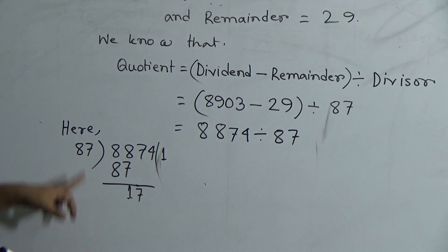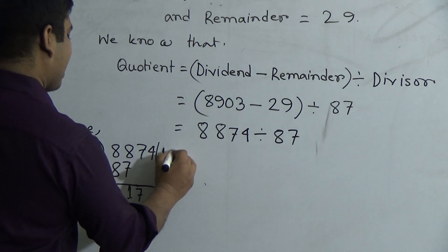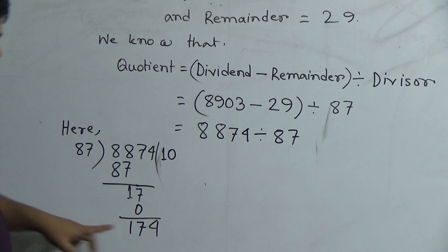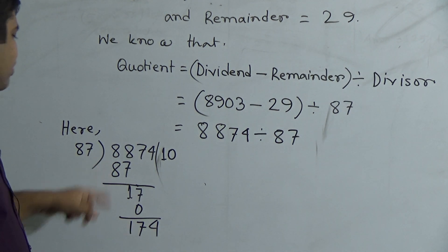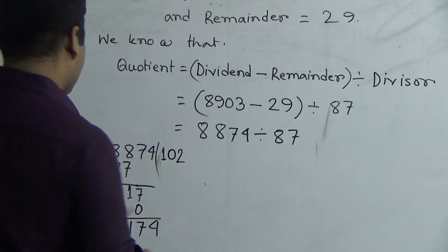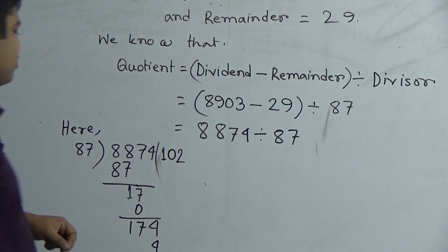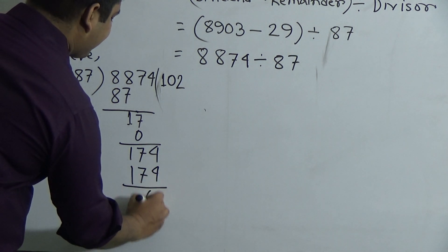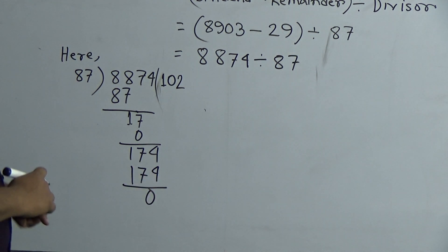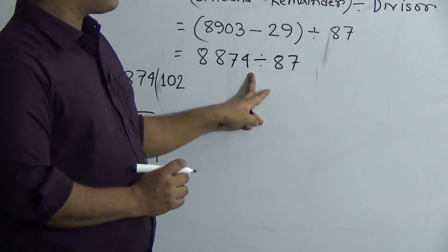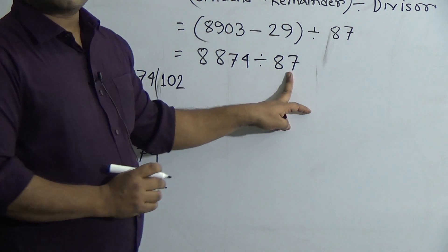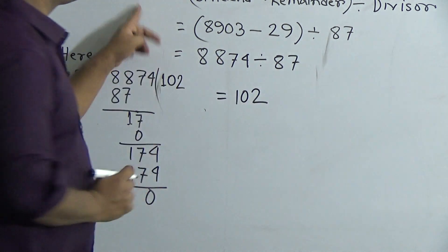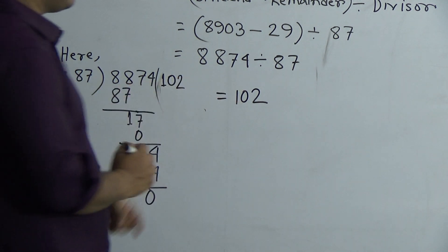In 17, 87 goes in 0 times, that means 0. Subtract and we get 174. In 174, 87 goes in 2 times, that means 72 is 14, carrying 1, 82 is 16 plus 1, 17. Okay, now we subtract and we get 0. So dear students, if we divide 8874 by 87, we get 102. So this 102 will be the quotient. I hope you have understood. And this is the answer.